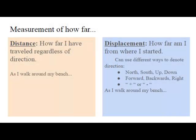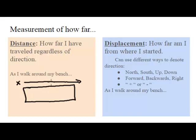If I'm making measurements of how far things are, that's distance. Distance is how far I've traveled regardless of direction. I want to run a thought experiment in which I walk around my laboratory bench. Let's say I start right here and walk in this direction, and I take four steps.